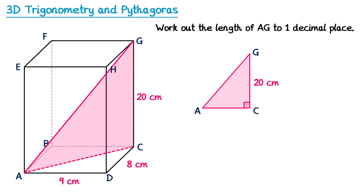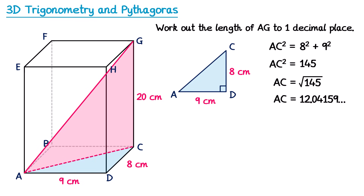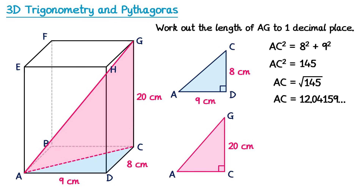To find AC we look at a different right-angled triangle first: triangle ADC on the base of the cuboid. DC is 8 cm and AD is 9. Using Pythagoras: AC² = 8² + 9² = 145, so AC = √145. Now since we're going to use that number in a moment, we're not going to round it off — that's called premature rounding, where you round before you finish the question. A much safer thing to do is write AC as √145, because that is the exact length.